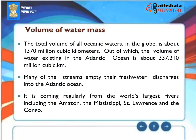Volume of Water Mass: The total volume of all oceanic waters in the globe is about 1,370 million cubic kilometers, of which the volume of water in the Atlantic Ocean is about 337.210 million cubic kilometers. Many streams empty their freshwater discharges into the Atlantic, including the world's largest rivers: the Amazon, the Mississippi, St. Lawrence, and the Congo.